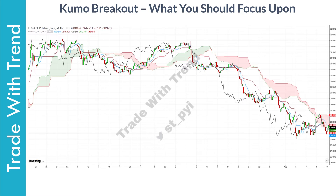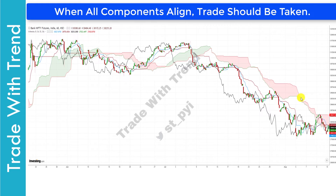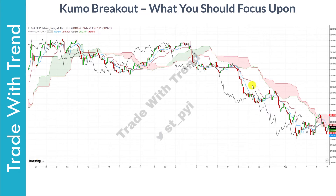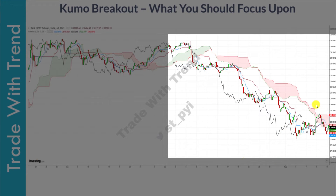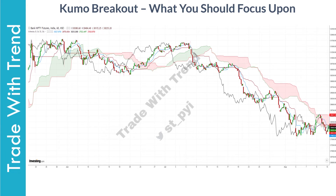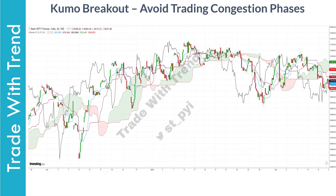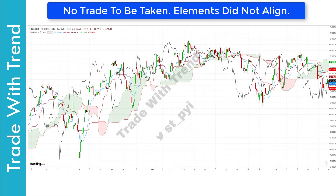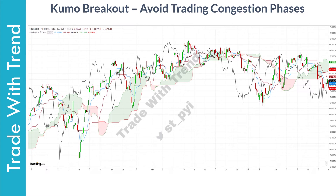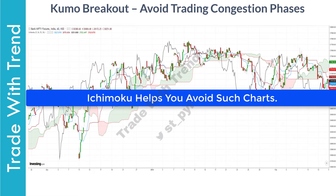The ideal scenario to execute a trade is when all components of Ichimoku Cloud suggest the same direction of trend. In this chart, Senku A and Senku B are clearly trending lower, Tenkan and Kijun are both heading lower, and Chikko is clearly below price in most instances. In the Kumo strategy, we wait for all elements to align in the direction of trend. Looking at this chart, there is no trade visible despite instances where price moves above and below the Ichimoku Cloud. Based on Ichimoku trading strategy, you would be sitting on the sidelines waiting for proper entry opportunities to show up.